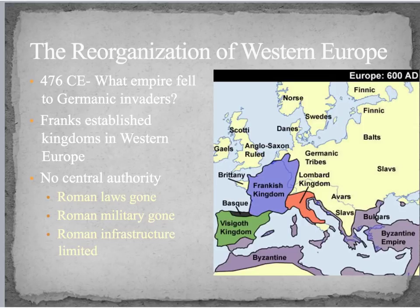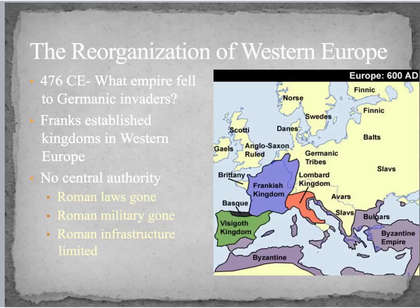Rome, which had used its rule of law to keep order for so many years, those laws are no longer being enforced. The Roman military, which had protected people and tried to stop invasions, is gone. And the Roman infrastructure becomes more limited — think about how the Romans were especially known for their roads and aqueducts and all of these things that made life easier. Now there's no one to maintain those things or no money to maintain them.